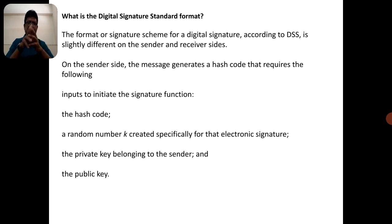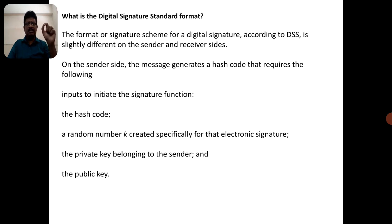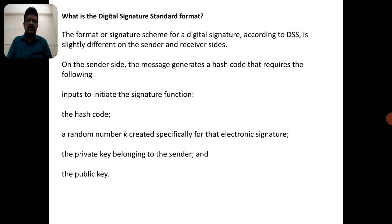On the sender side, the message generates a hash code. The input to initiate the signature function includes: first, the hash function; second, a random number K created specifically for the electronic signature; and third, the private key belonging to the sender and the public key. Both end users can generate a pair of keys — the public key and the private key.